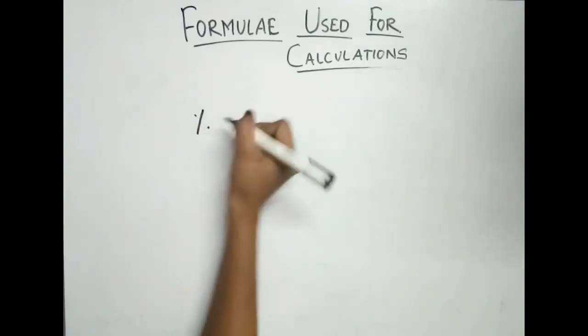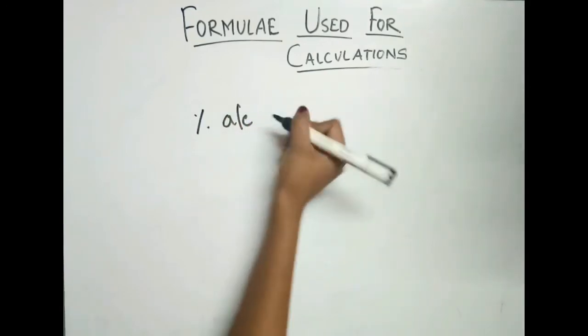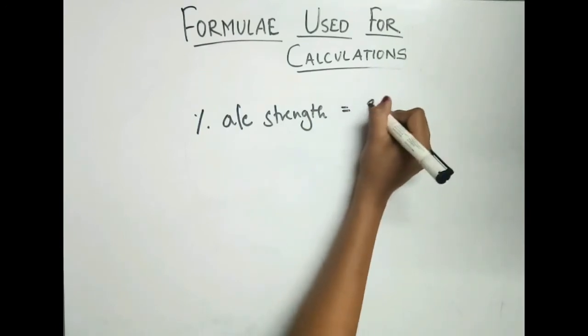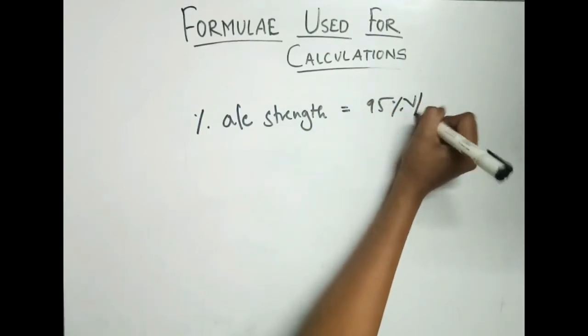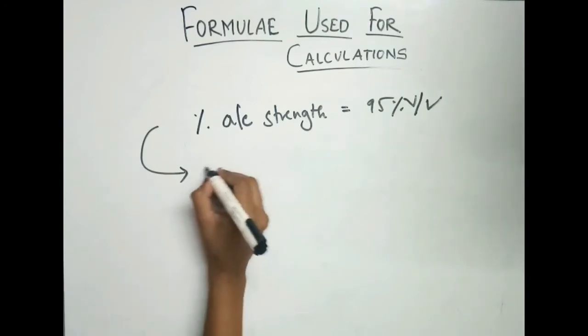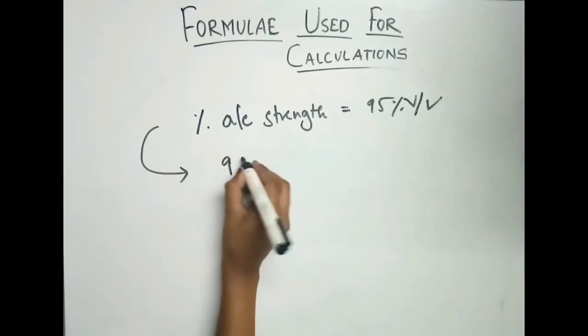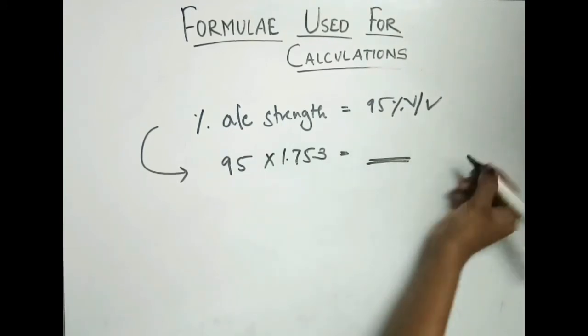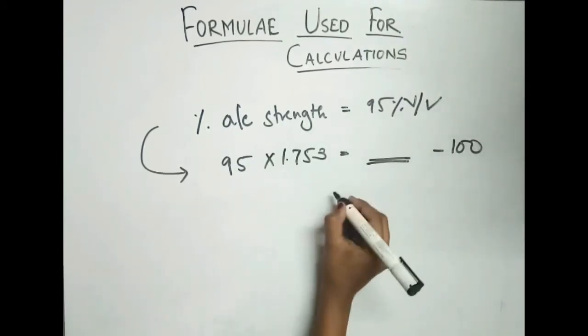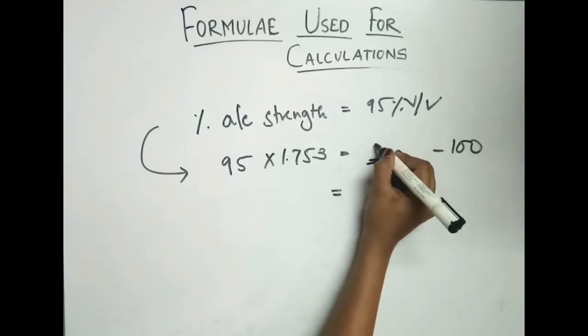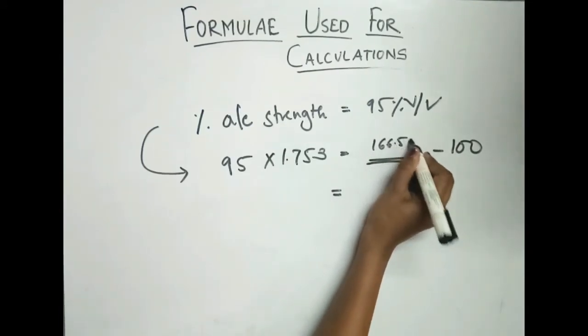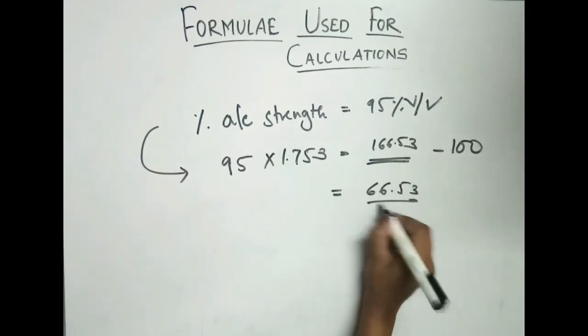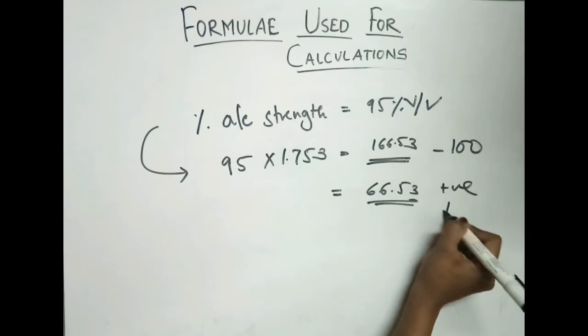See one example. Percent of alcohol strength equals 95% volume by volume. To calculate the proof spirit, we do 95 times 1.753. Whatever answer we get, we deduct 100 from it. So 166.53 minus 100 equals 66.53. This value is positive, so it is over proof.